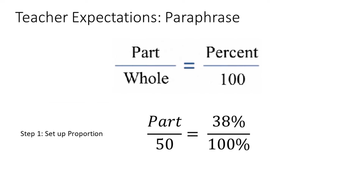When we set up a proportion, we're going to put our part over our whole. We know that we have a whole of 50, and we have 38%. So 38 will be out of 100. We have our proportion set up. This is expected on your paper.